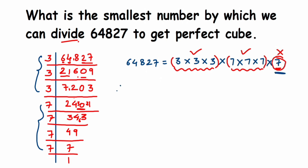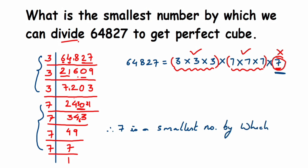Therefore, 7 is the smallest number by which 64827 should be divided to get a perfect cube. The answer is 7. In case the question also asks you to find the perfect cube itself, we divide 7 on both sides.